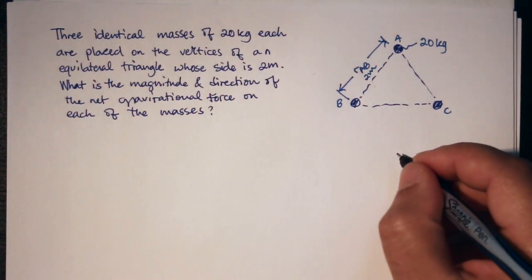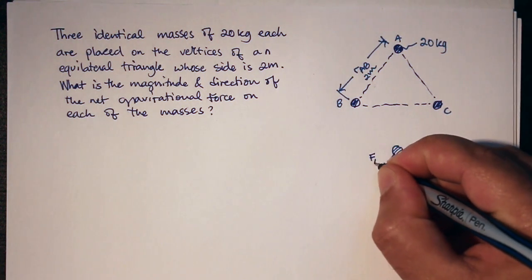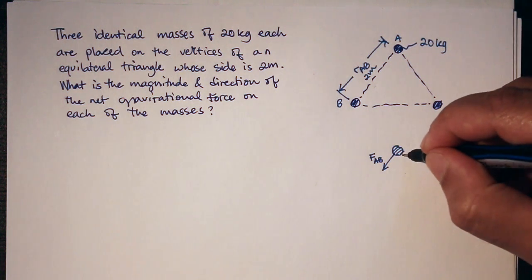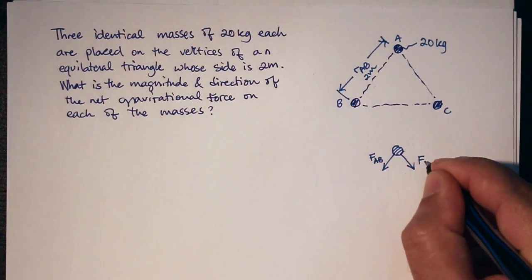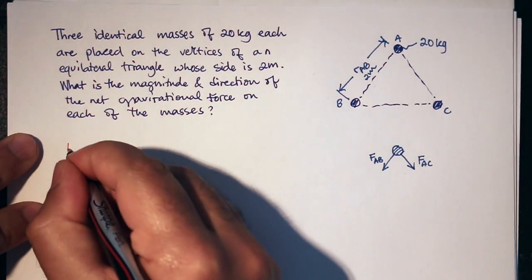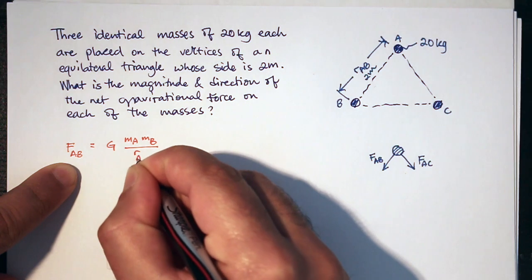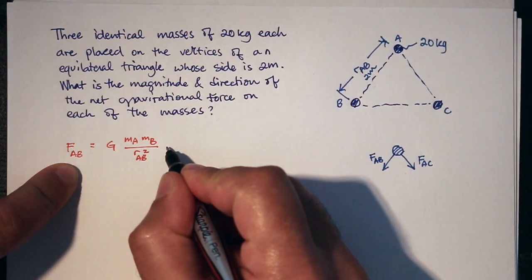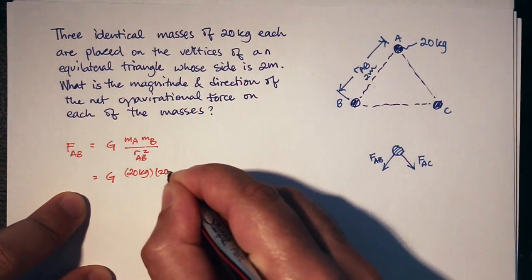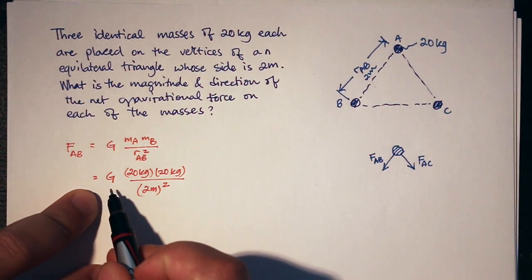If I want to isolate mass A and look at what forces are acting on A, there is the gravitational force from B — I'll label that F_AB, since B pulls on A with F_AB. And C also pulls on A with F_AC. So F_AB is equal to G times the mass of A times the mass of B divided by the distance between A and B squared. That gives us G multiplied by 20 kilograms times 20 kilograms divided by 2 meters squared.